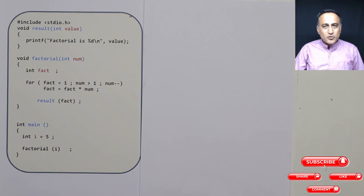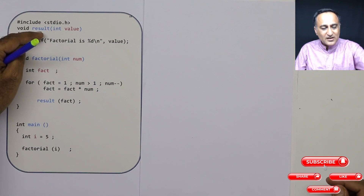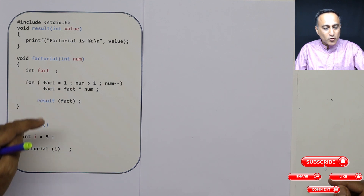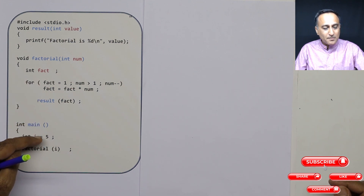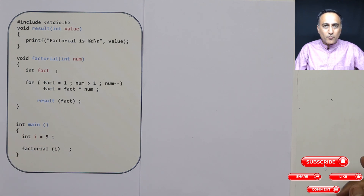The computer must be able to manage that after executing result, it should know where to come back in factorial. After completing factorial, it should know where to come back in main. And after completing execution of main, it should know which location to return to in the operating system.